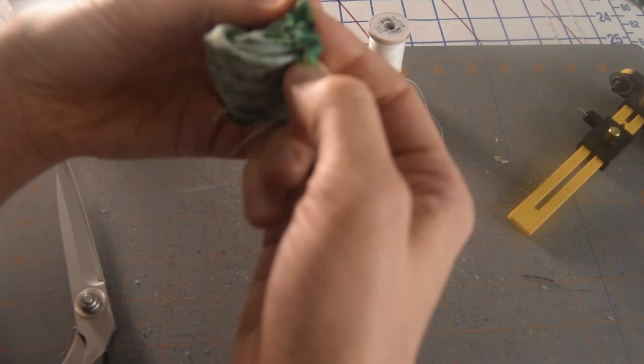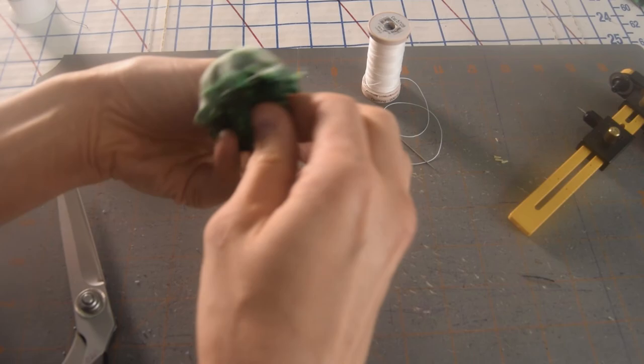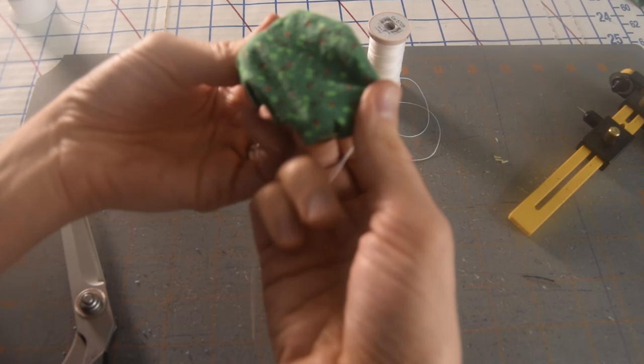I always try and end my last stitch going outwards. So I'm going to the right side of the fabric. Okay, and now I'm going to make my needle, my knot.